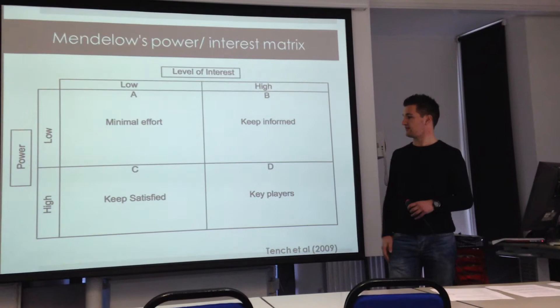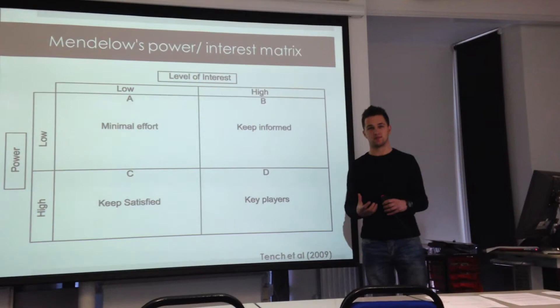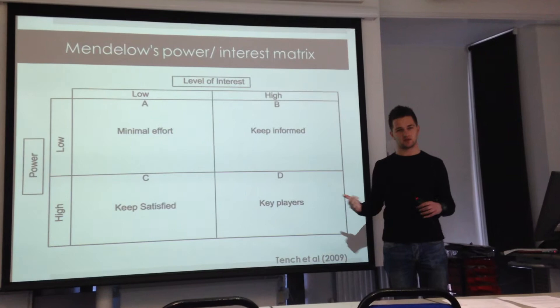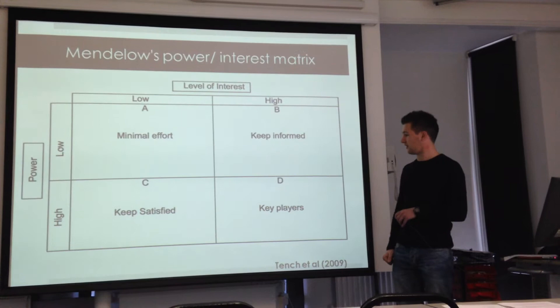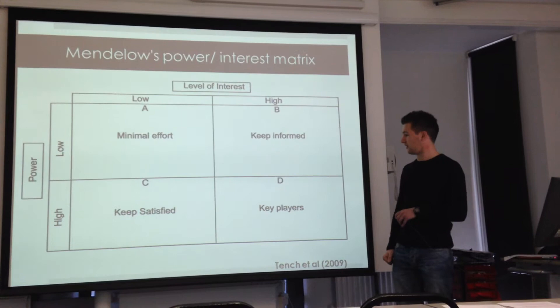For high power and low interest stakeholders, you keep them satisfied. You want to keep these people happy because they've got the power to do something — if they are made unhappy, their interest might suddenly increase and you've got more of a problem. And your key players, high power and high interest, you want to keep these people happy because they have both the interest and the power to really impact the project in a negative way.